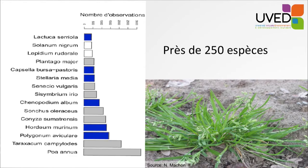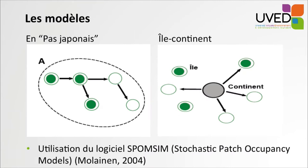Each of these species is distributed in a given way. We wanted to understand the dynamic: is it that of the so-called Japanese steppe model, meaning that the populations migrate from one year to the next from the bottom of one tree to the next? Or is this rather like a continent and island pattern, where the station is the continent and it sends seeds to all the trees around, and progression is made not from one tree to another but from the central continent to the surrounding islands.